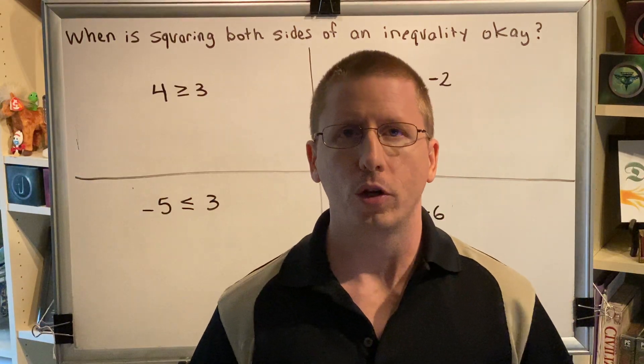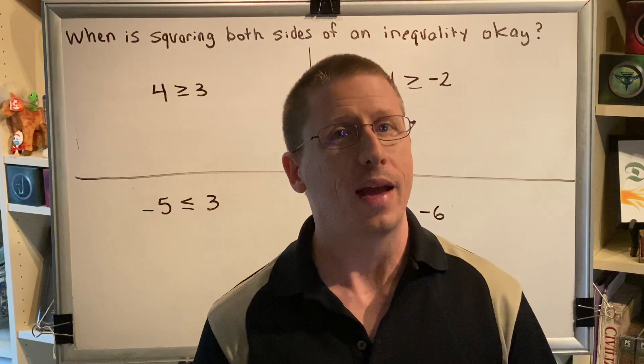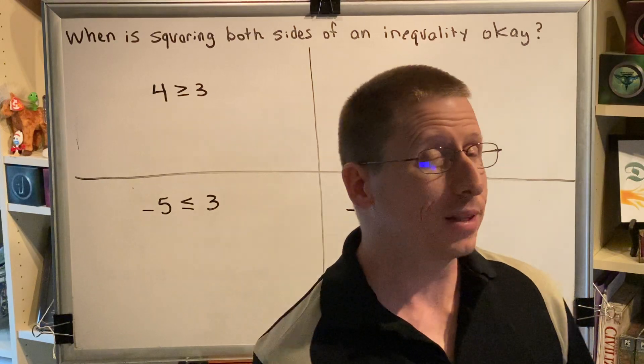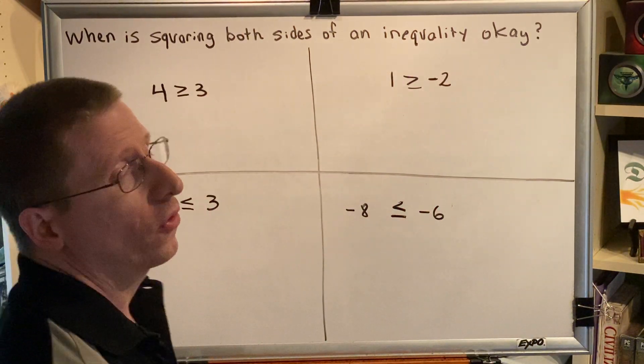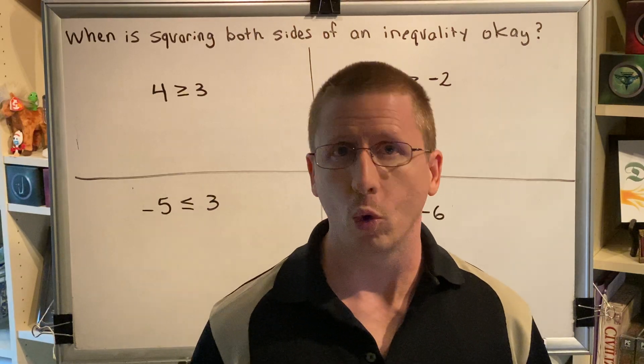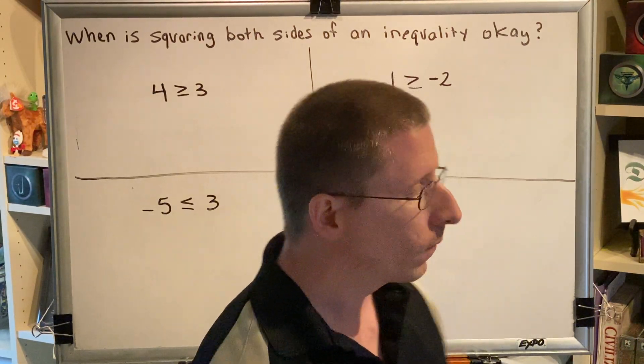Traditionally when working with inequalities we remember the very familiar rule: if you multiply or divide both sides by a negative then you have to flip the direction of your inequality sign. But this is different. Squaring both sides is a different mathematical action. We don't have a rule that we've worked out for that, so let's see if we can maybe discover one.